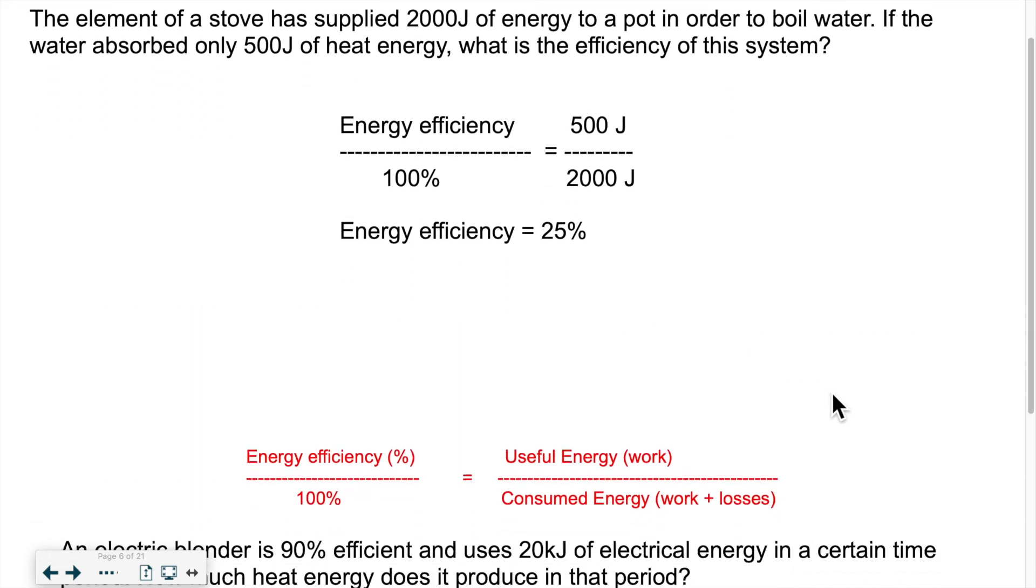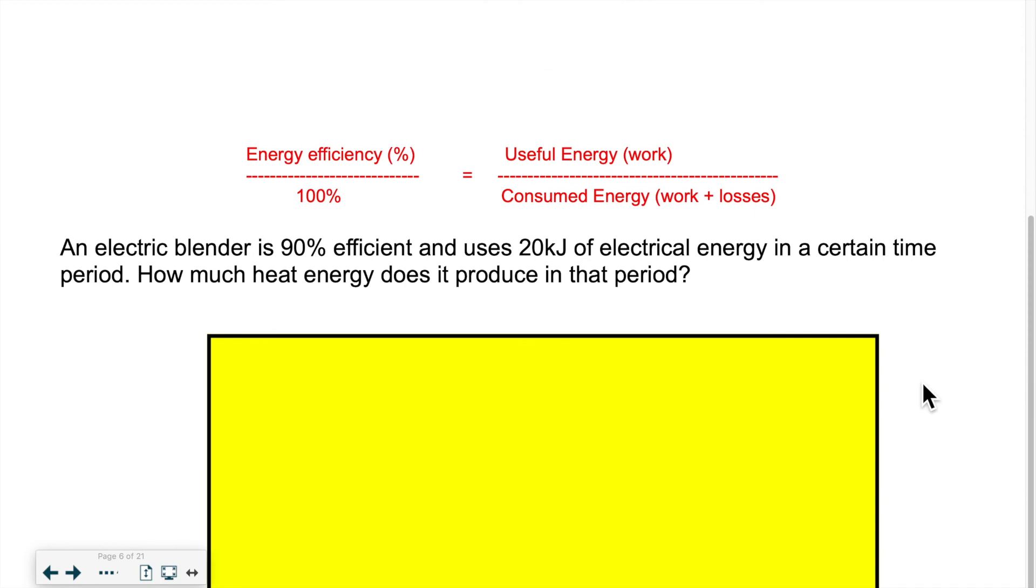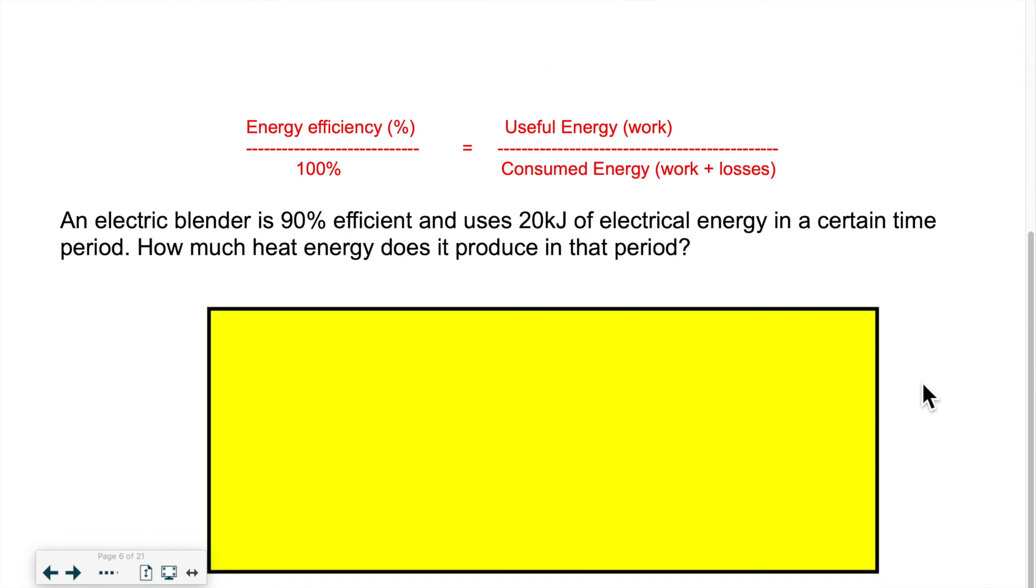Now if we take a look at the second example. So I have an electric blender is 90% efficient and uses 20 kilojoules of electrical energy in a certain amount of time to do its job. So how much heat energy does it produce in that period? So you've got to be careful. There's two things here. So they're asking you for heat energy. So essentially they're asking you how much energy dissipated in the room. How much did not do any work? What was the excess?